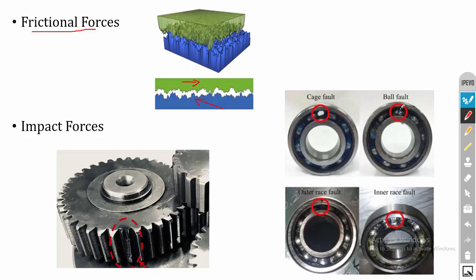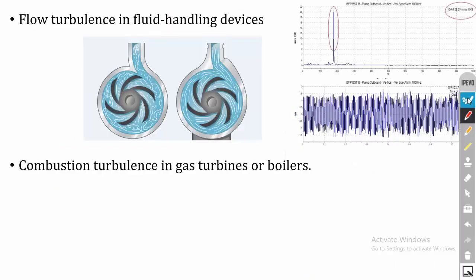We generally measure vibration in bearings, and if the bearing is subjected to vibration, it will definitely affect the system. The next internal force is flow turbulence in fluid handling devices. This occurs in pipes and pumps. For example, in a centrifugal pump, there is a mixture of laminar and turbulent flow — some particles move linearly and some move in a turbulent manner. If the flow is turbulent, it will vibrate the blade, then the outer casing. If the centrifugal pump is fixed to a motor, the vibration will be transmitted to the motor and damage it.